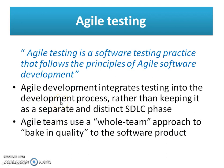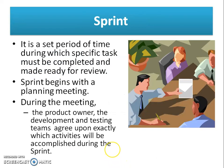What is exactly Agile testing? Agile testing is a software testing practice that follows the principles of Agile software development. Agile development integrates testing into the development process rather than keeping it as a separate and distinct SDLC phase. The Agile team uses a whole-team approach to bake in quality to the software product, allowing the testing team to collaborate actively with the development team, helping them identify and transfer issues into executable specifications.